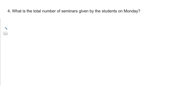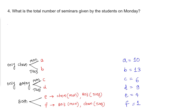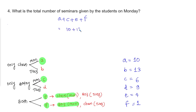Question 2: how many seminars on chemistry were given on Tuesday? On Tuesday, chemistry seminars were given by B and F students, so the answer is B plus F equals 13 plus 1 equals 14. Question 3: how many students gave a seminar on botany on Monday and chemistry on Tuesday? These are the F students, so the answer is F equals 1.